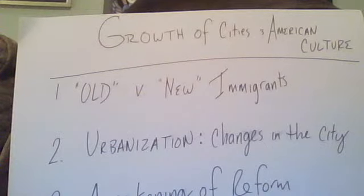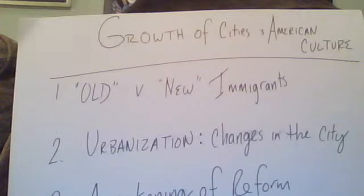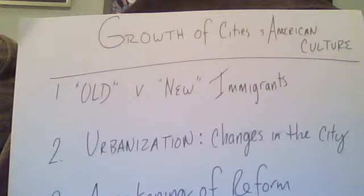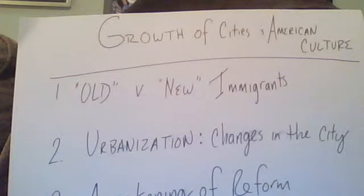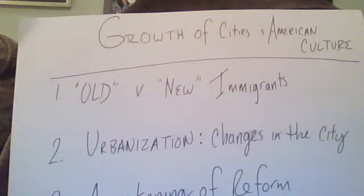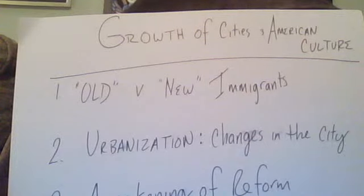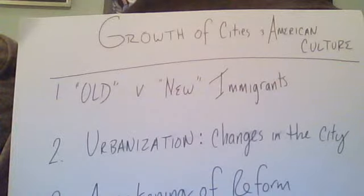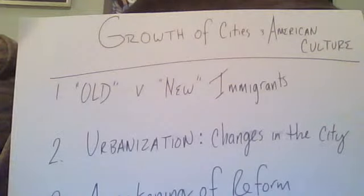Technology also plays a role. We see the introduction of large steamships, which makes the one-way passage across the Atlantic Ocean relatively cheap. Now, looking at old immigrants versus new immigrants: through the 1880s, the overwhelming majority of immigrants came from northern and western Europe — the British Isles, Germany, and Scandinavia.